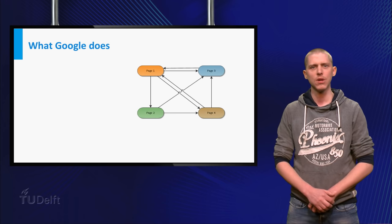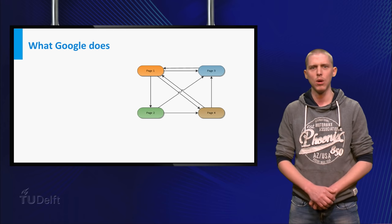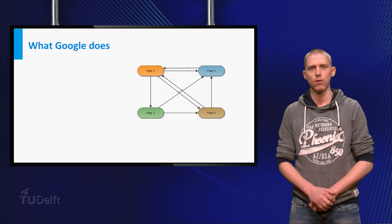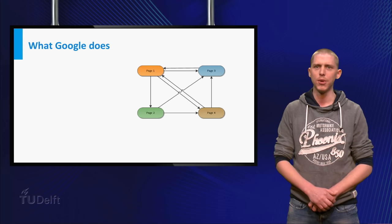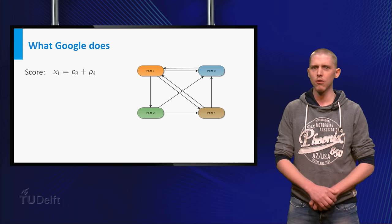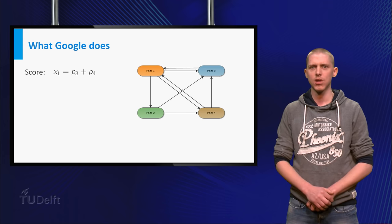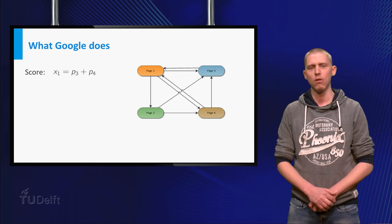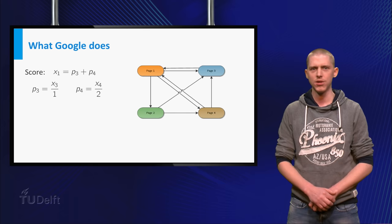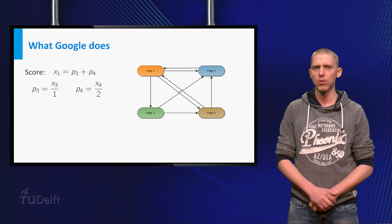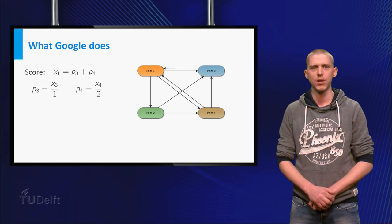As an example, consider the simplified internet given by websites 1, 2, 3 and 4. An arrow from 1 to 2 means that page 1 links to page 2. The score of page 1 is defined as the sum of the partial scores of all pages linking to page 1. The partial score of a page is the score of the page divided by the number of outgoing links of that page.